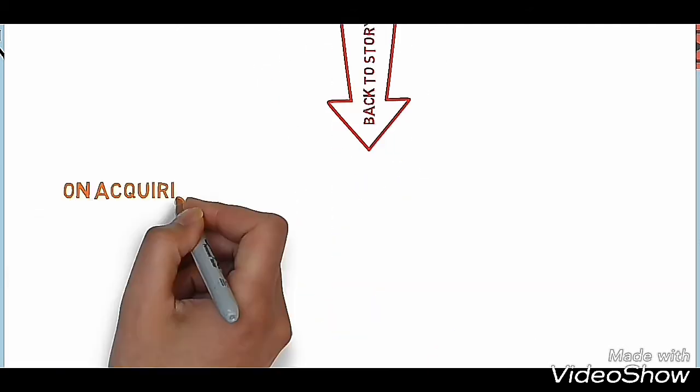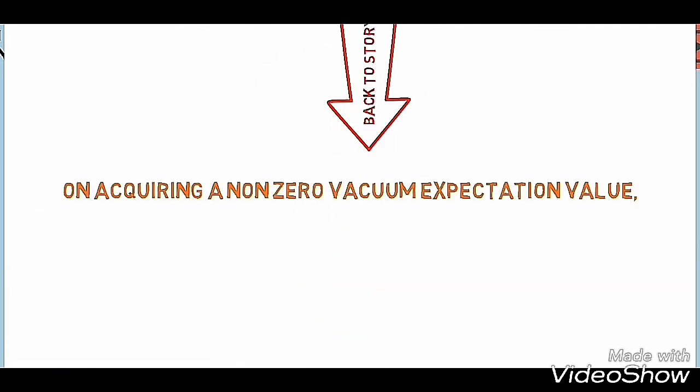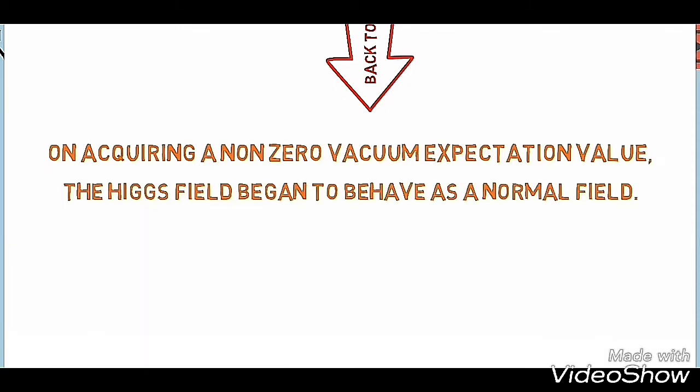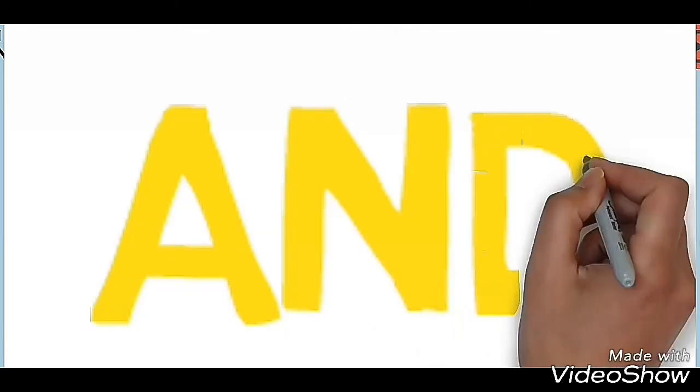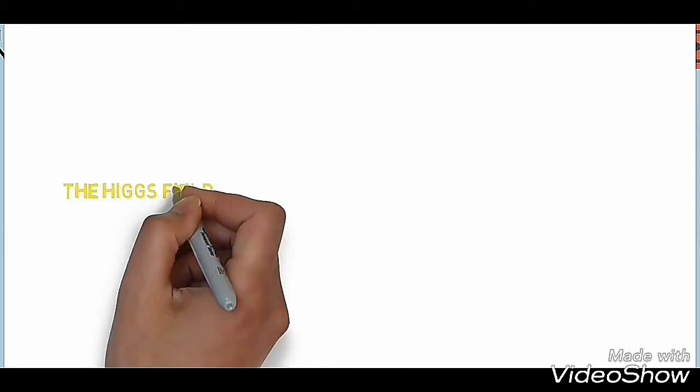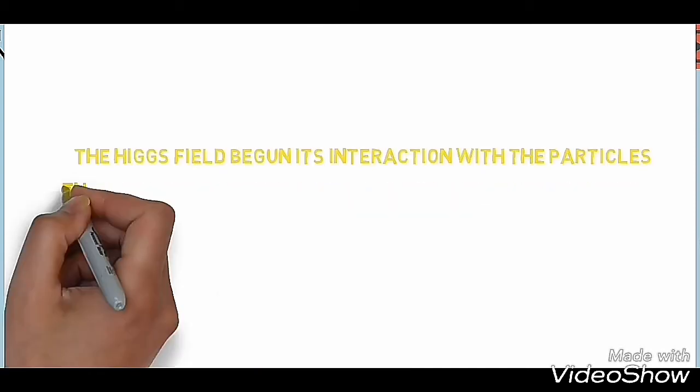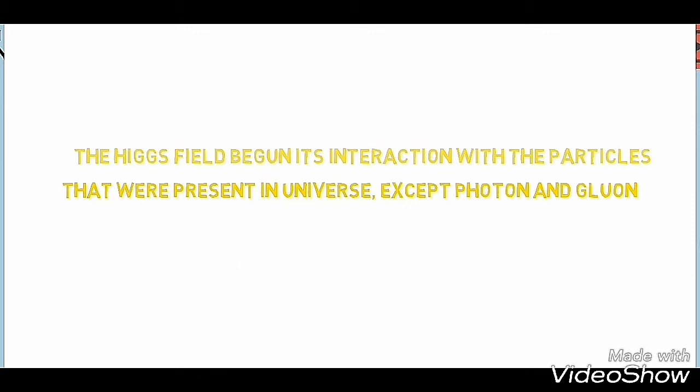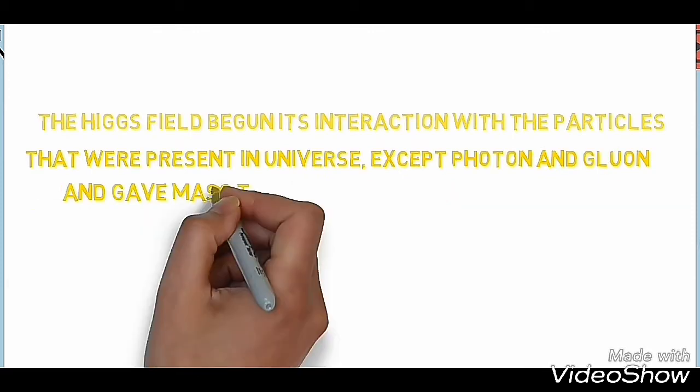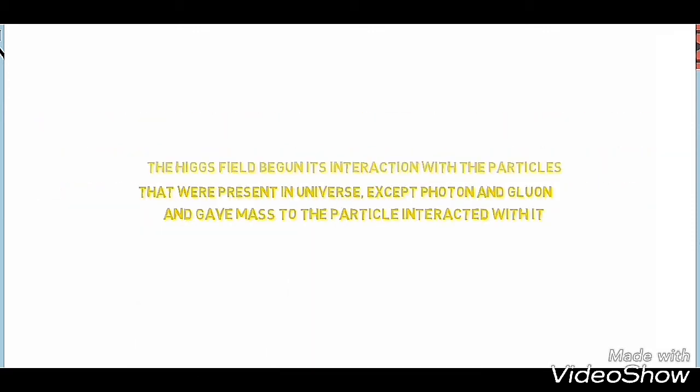Now back to the story. On acquiring a non-zero vacuum expectation value, the Higgs field began to behave as a normal field and began its interaction with the particles that were present in the universe, except photons and gluons, and gave mass to the particles interacted with it.